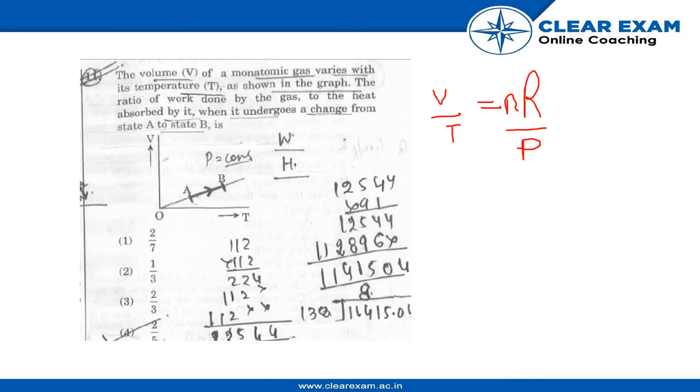By using the isobaric process, we know delta W divided by delta Q equals R divided by 5R by 2.